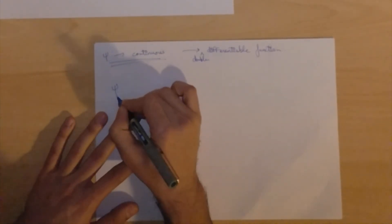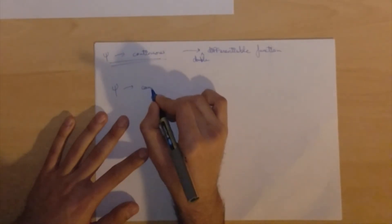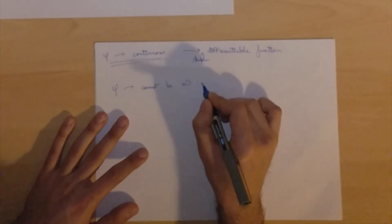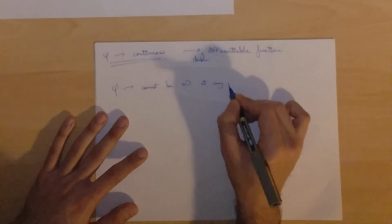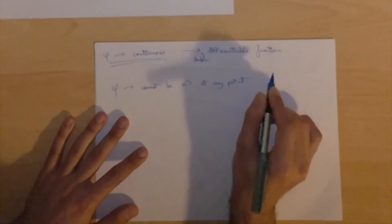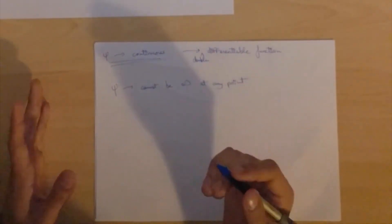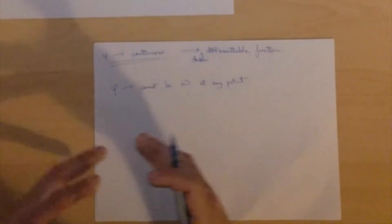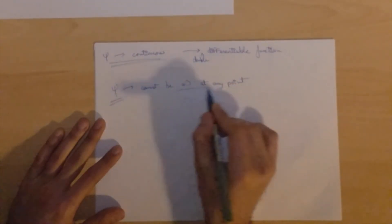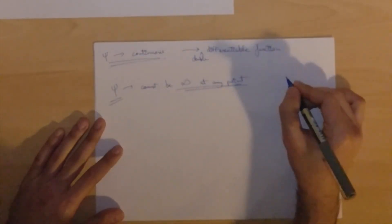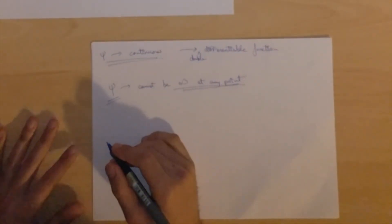The next thing is psi cannot be infinity at any point. Because if it is infinity at any point, then our normalization factor would have to be zero. And that doesn't make much sense, because then your whole value is zero. And it's zero times infinity is also undefined, so there's that area.